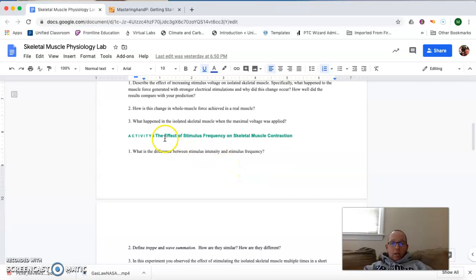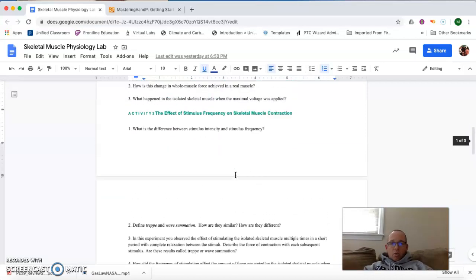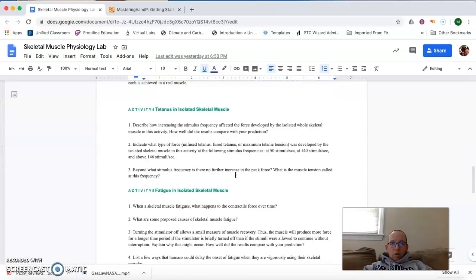In activity three, you're going to look at the effect of stimulus frequency, that is how often a muscle is stimulated, in terms of what kind of force you can generate from a muscle. You're actually going to start to learn about a phenomenon called tetanus. Tetanus is just a sustained contraction in a muscle, which can, in certain instances, be good, because it can allow you to generate maximum tension and maximum force from a muscle.